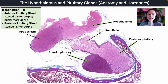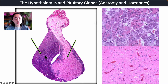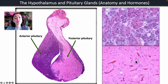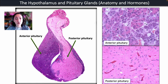A tip to identify the anterior versus posterior pituitary gland: the anterior pituitary gland stains a darker purple color and the nuclei are much more dense, while the posterior pituitary gland stains a lot lighter. Looking at a microscope image, the lighter one is the posterior pituitary gland and the darker one is the anterior pituitary gland. The anterior and posterior pituitary glands have separate embryonic origins, which helps explain why they look so different and have such different functions.